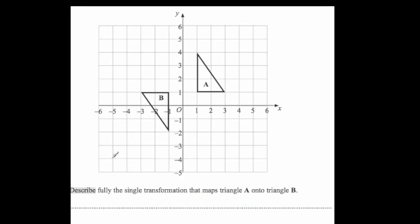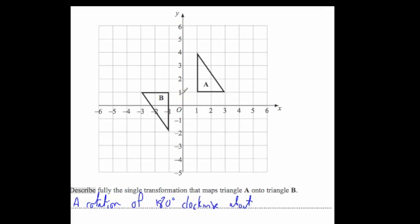Describe fully the single transformation that maps A onto B. It's going to be a 180 degree rotation - you can see that again because the top becomes the bottom. A rotation of 180 degrees - you don't necessarily need to state clockwise or anti-clockwise, but I'm just going to do 180 degrees clockwise. With 180 degree ones, the centre of rotation is usually in the middle of the two points. You can see it's going to be about (0, 1). If you're not sure, put your tracing paper over it, mark the centre of rotation, rotate A 180 degrees, and you'll find it lands on top of B.